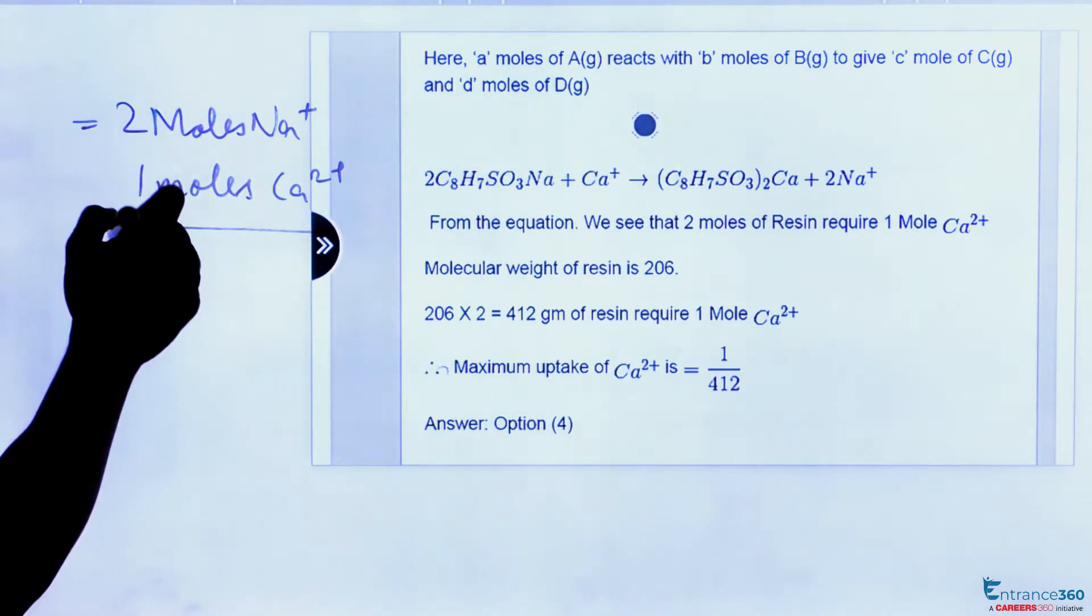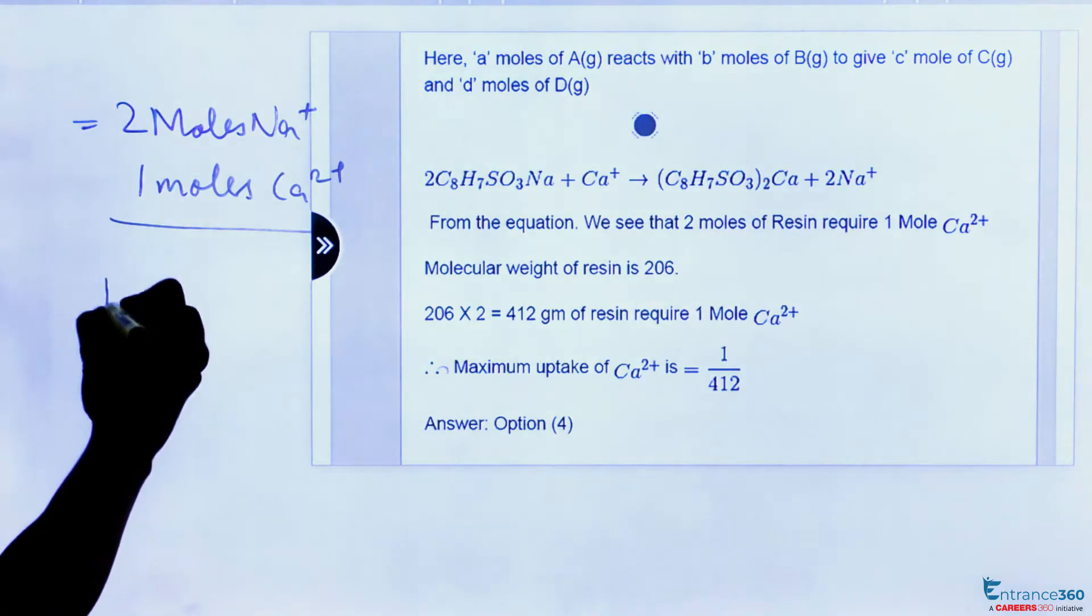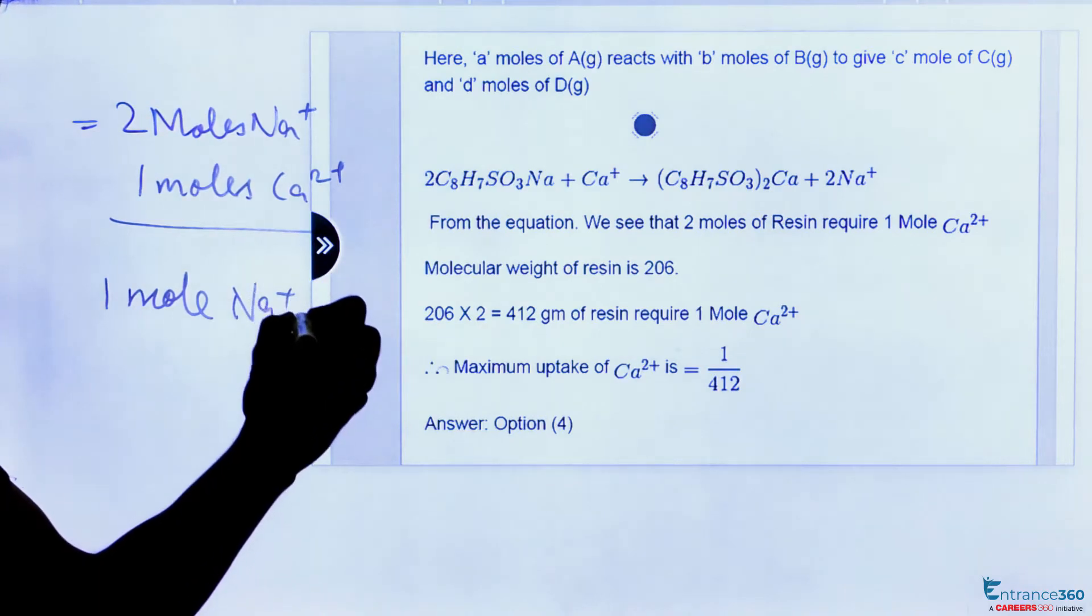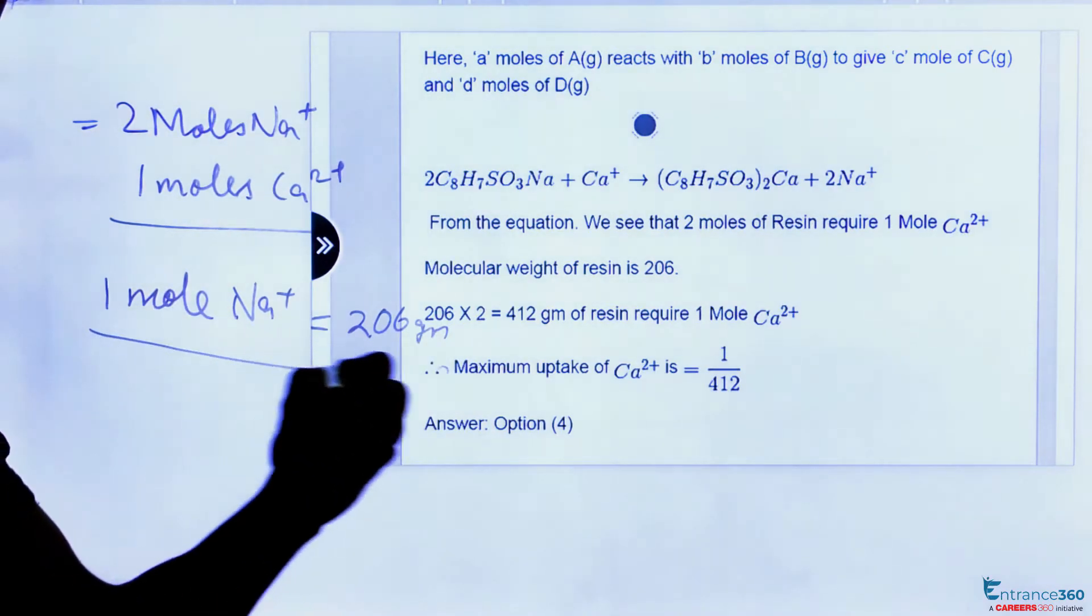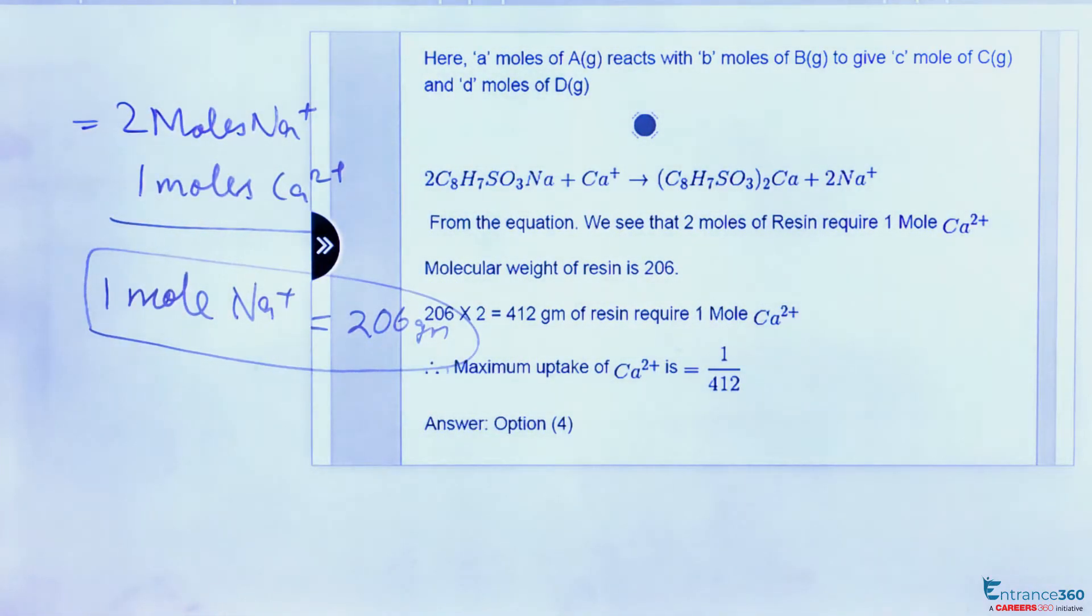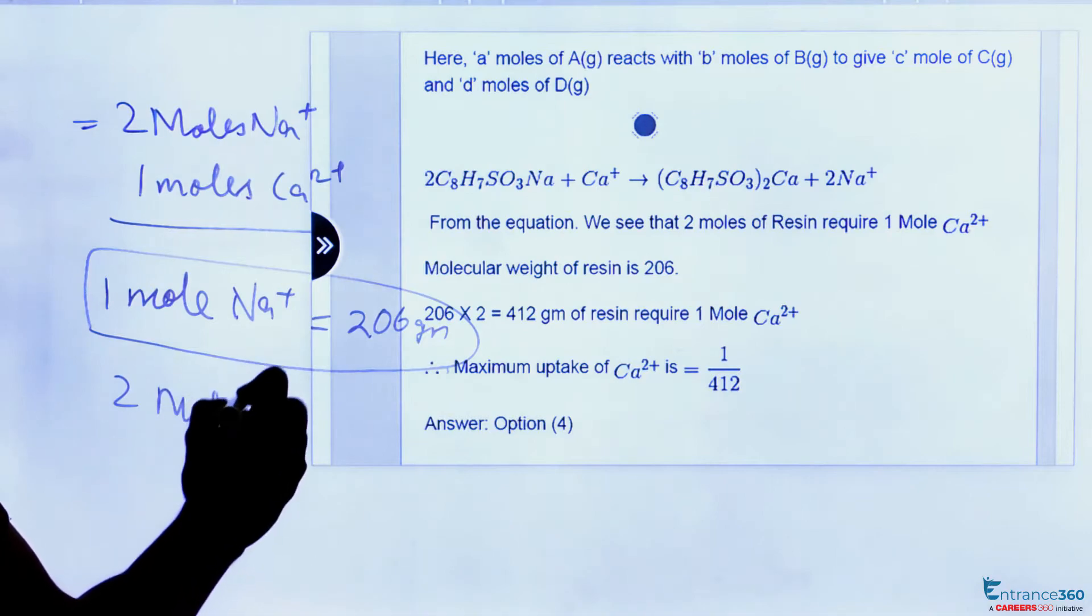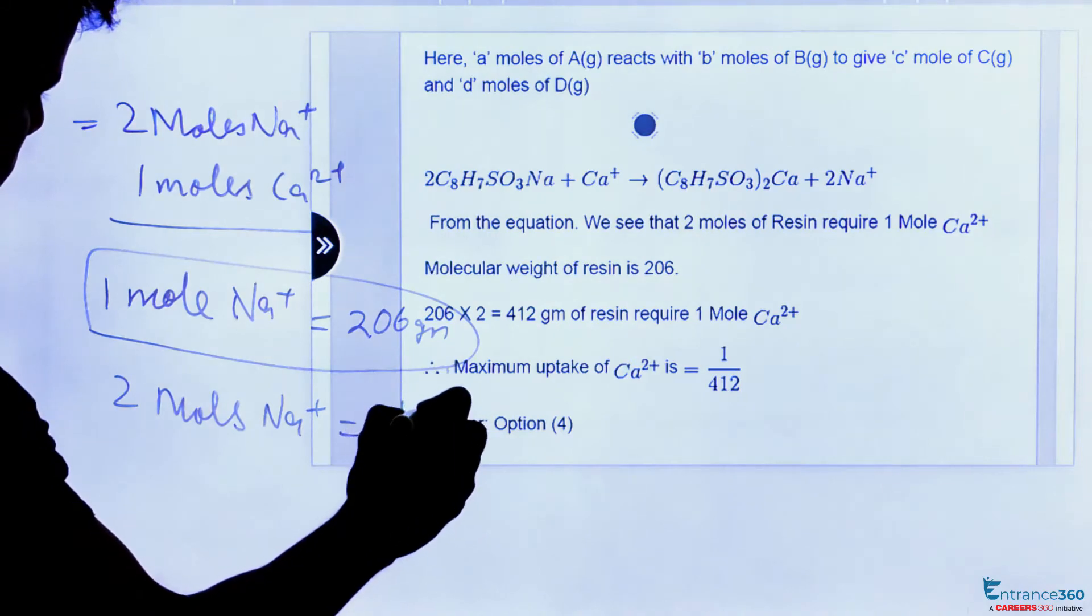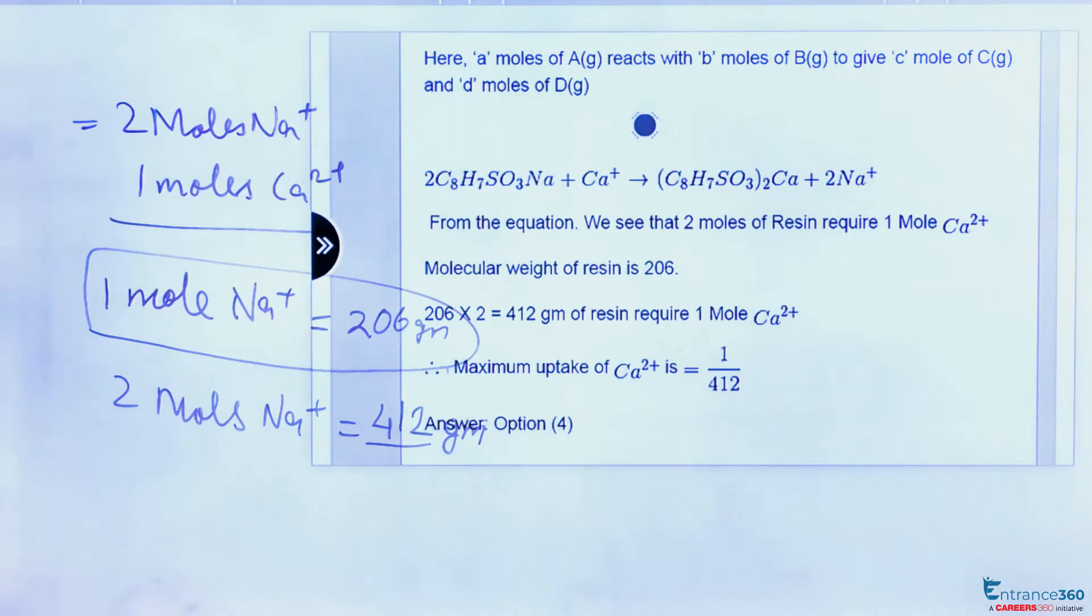Now we can see that one mole of sodium ion is equivalent to 206 grams of resin. For this process, we need two moles of sodium ion, which would be two moles of resin, and the weight would be 412 grams.